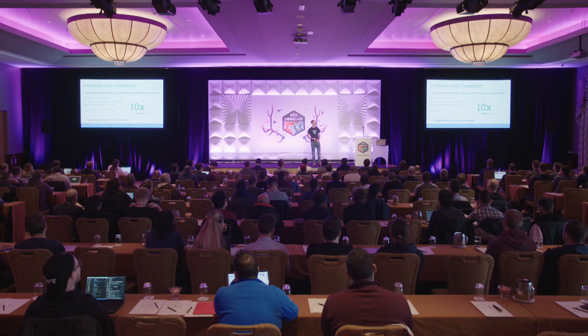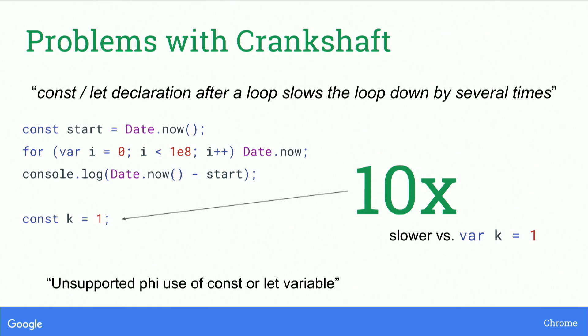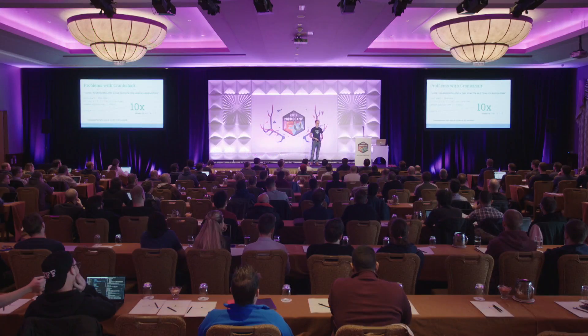Here's just one example. We'd get bugs logged like: 'const/let declaration after a loop slows down the loop by several times.' Why would that possibly happen? You have a loop and declare a variable after it somewhere in the same function. If you declared it as a var, everything would be fine. Then one day you clean up your code and change it to a const — now it's 10 times slower in Crankshaft. This kind of thing happened all the time: you'd change something very slightly, fall off this performance cliff, and if you dug into it you'd see cryptic error messages like 'unsupported phi use of const or let variable,' which doesn't make any sense to a developer.